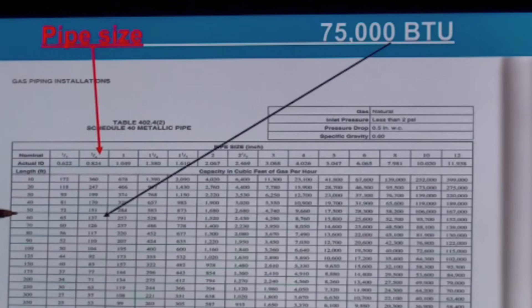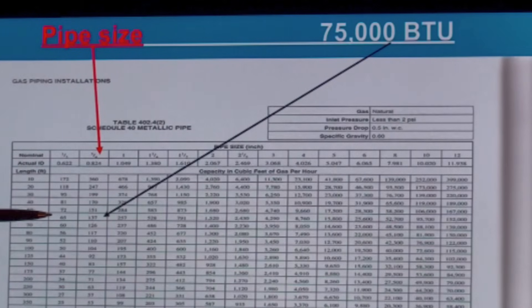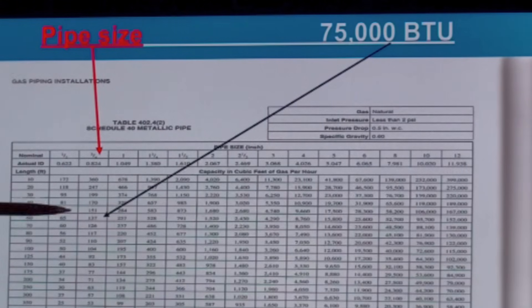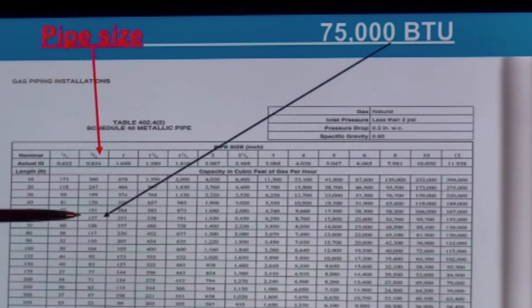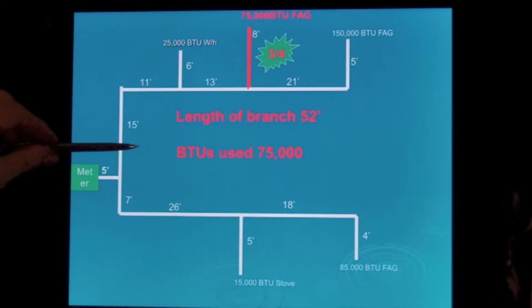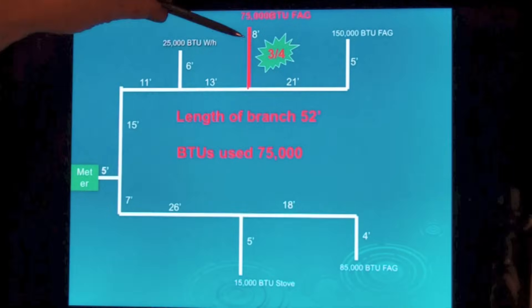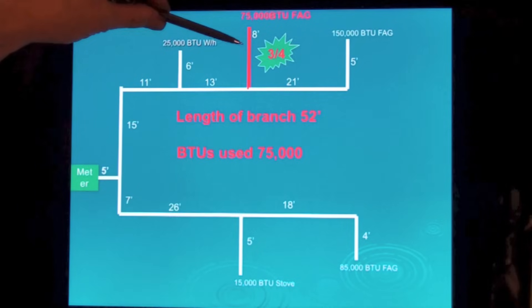We can't go fifty, so we've got to go sixty. Half-inch will do sixty-five. That's not enough because I've got seventy-five. So I have to use three-quarter inch for the drop. That's this one right here. Three-quarter inch pipe.